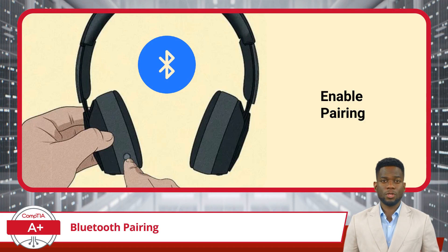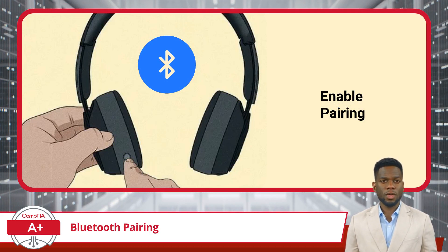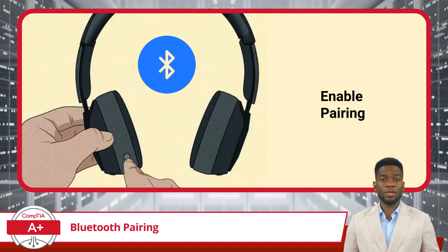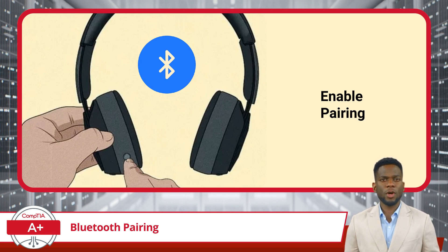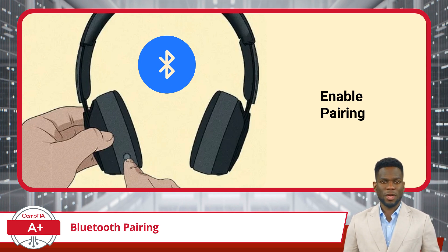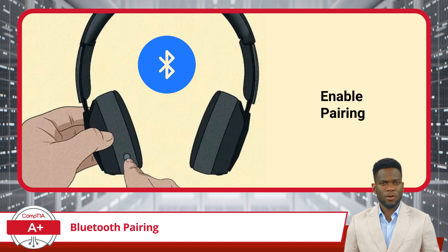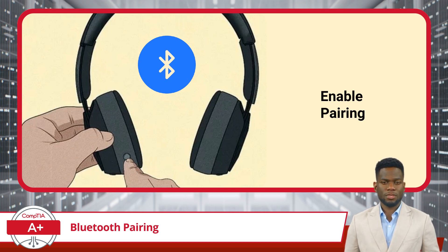Once your Bluetooth antenna is enabled and connections are allowed, the next step in the pairing process begins with placing the Bluetooth device you want to connect with into pairing mode. This is usually done by holding a button on the device, such as a long press on the power button of Bluetooth headphones. This puts the device into a state where it actively looks to connect with other Bluetooth-enabled devices.